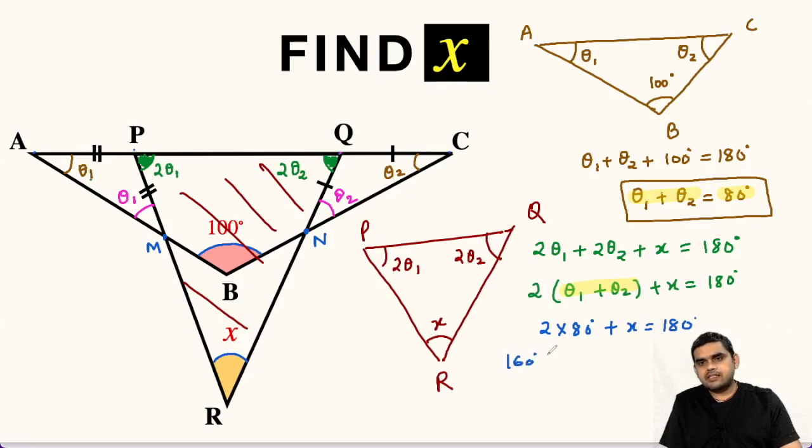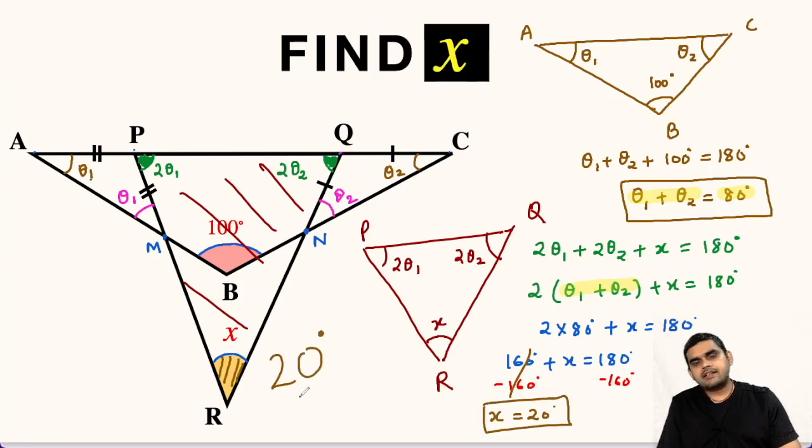So 160 degrees plus x equals 180 degrees. Let us subtract 160 degrees from both sides. This gets cancelled and we are left with x equals 20 degrees. So the value of this unknown angle x is 20 degrees.